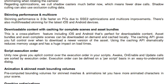Downloadable content with caching for complete scenes and asset bundles. This is a cross-platform feature including iOS and Android, perfect for downloading content. Asset bundles and even complete scenes can be downloaded on-demand and cached locally. The caching API gives you full control over when to download a new version of an asset and dramatically reduces memory usage, with a huge impact on load times. I've noticed that asset bundles actually do use a lot of memory — when I tried to load a sample project on my iPhone it kept crashing, even though it worked perfectly on the desktop. It turned out it was just using a lot of memory.